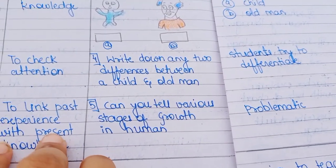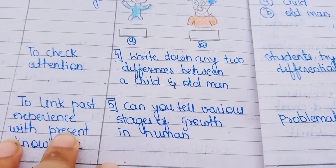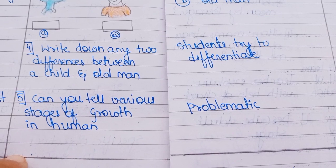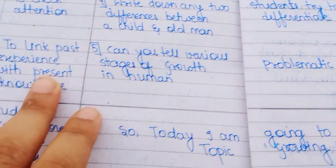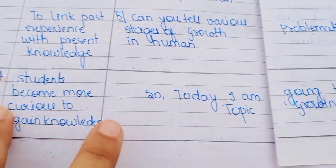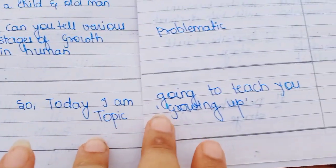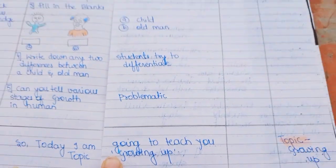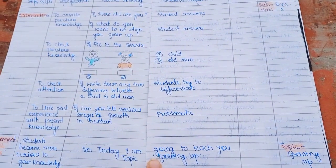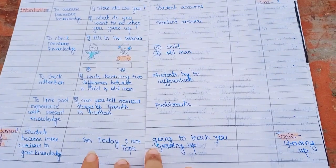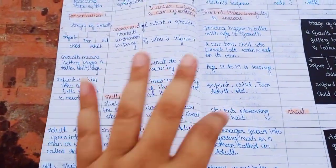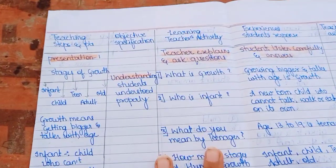After that, we ask: 'Can you tell the various stages of growth in humans?' — this would be problematic for students. After that, we announce our statement: 'So students, today I'm going to teach you the topic Growing Up.' You can also see the objectives and specifications here.